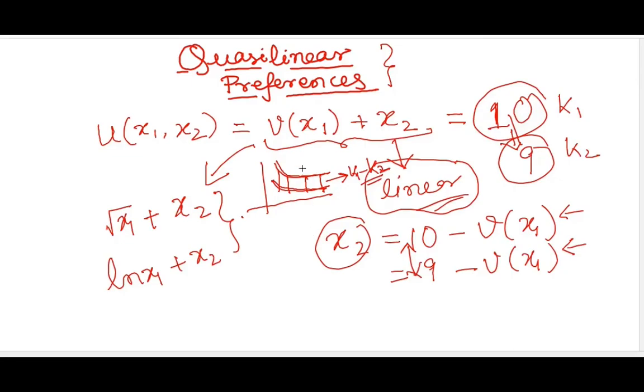So you can say that the ICs or indifference curves are just barely shifted if I change this value of k.